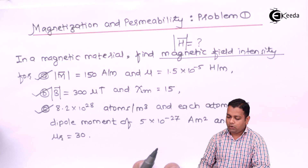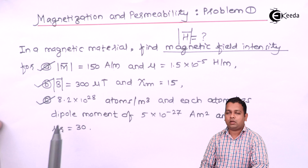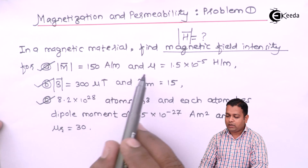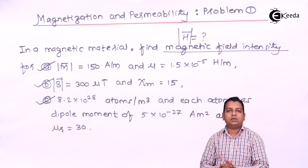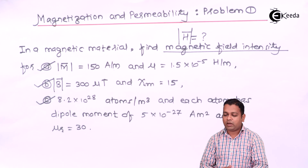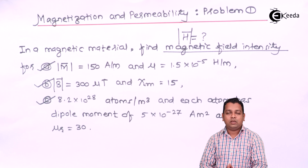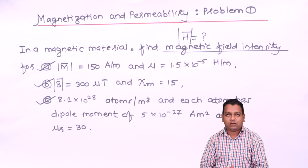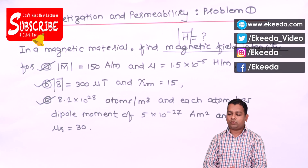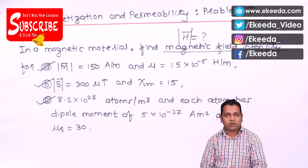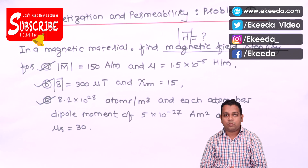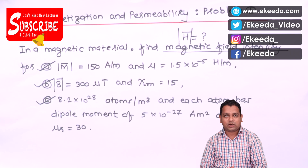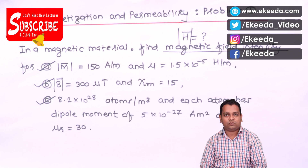I hope you have understood the calculation of magnetic field intensity when magnetization and permeability are given, or when magnetic flux density and magnetic susceptibility are given. In the next video we are going to take the next problem based on magnetization and permeability. For more information on electromagnetic field theory, you can subscribe to the Ekeda channel. Thank you.